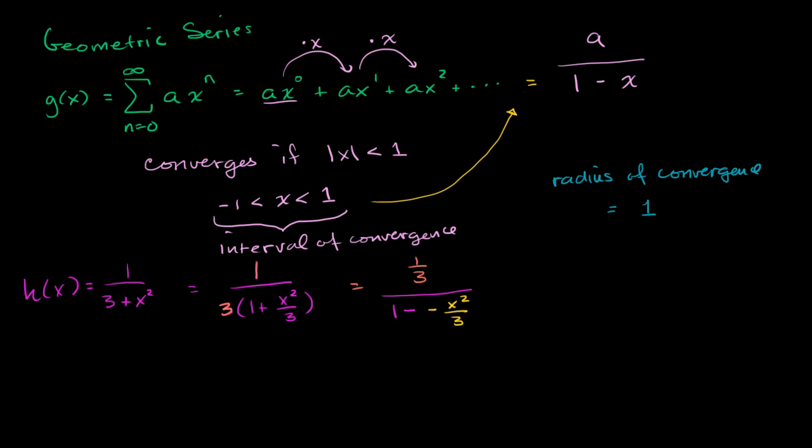So now we could say that the sum from n = 0 to infinity of—our first term is 1/3—1/3 times our common ratio to the nth power.